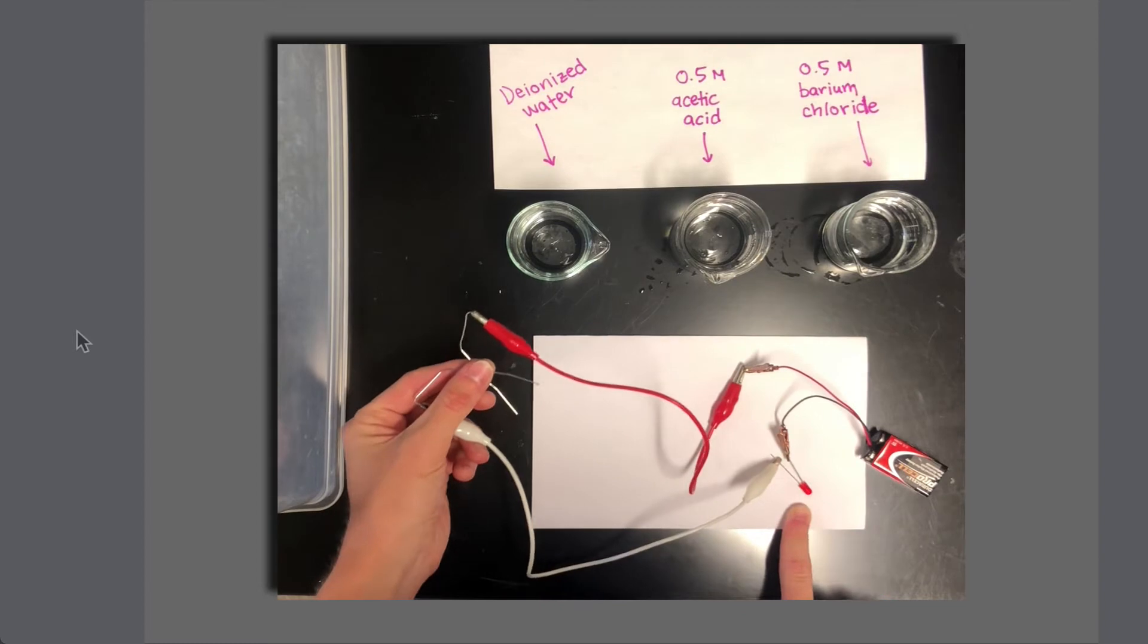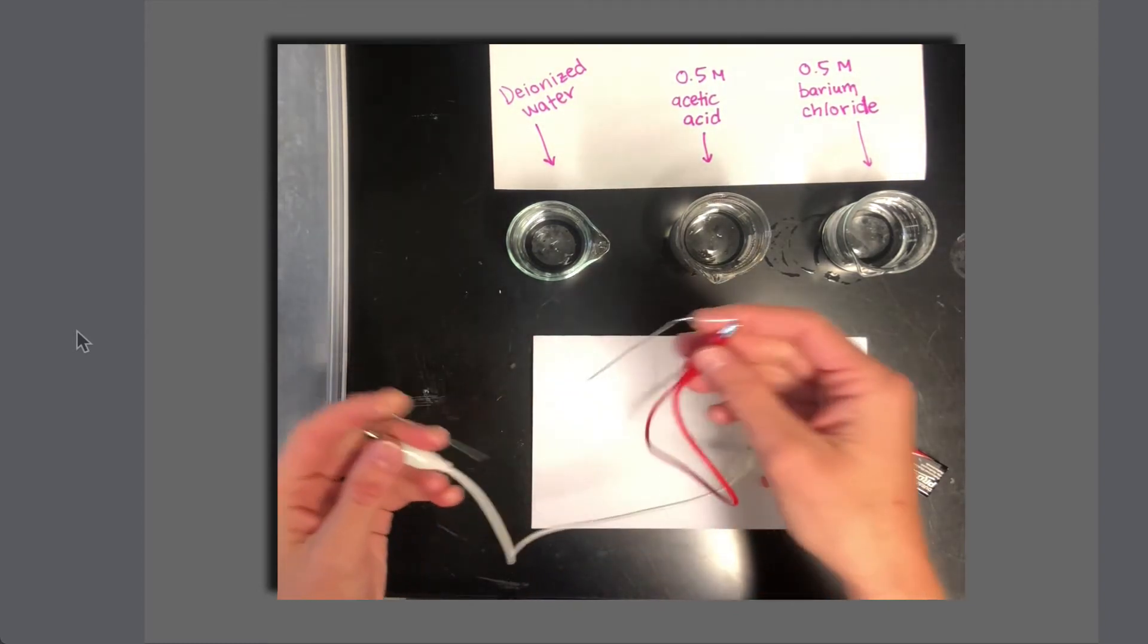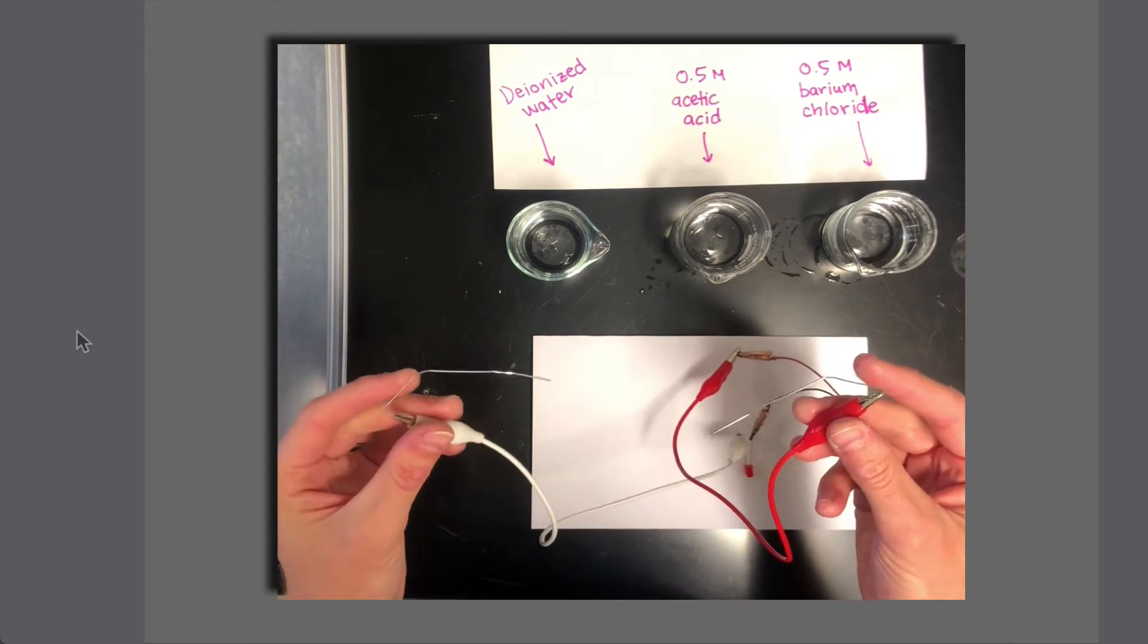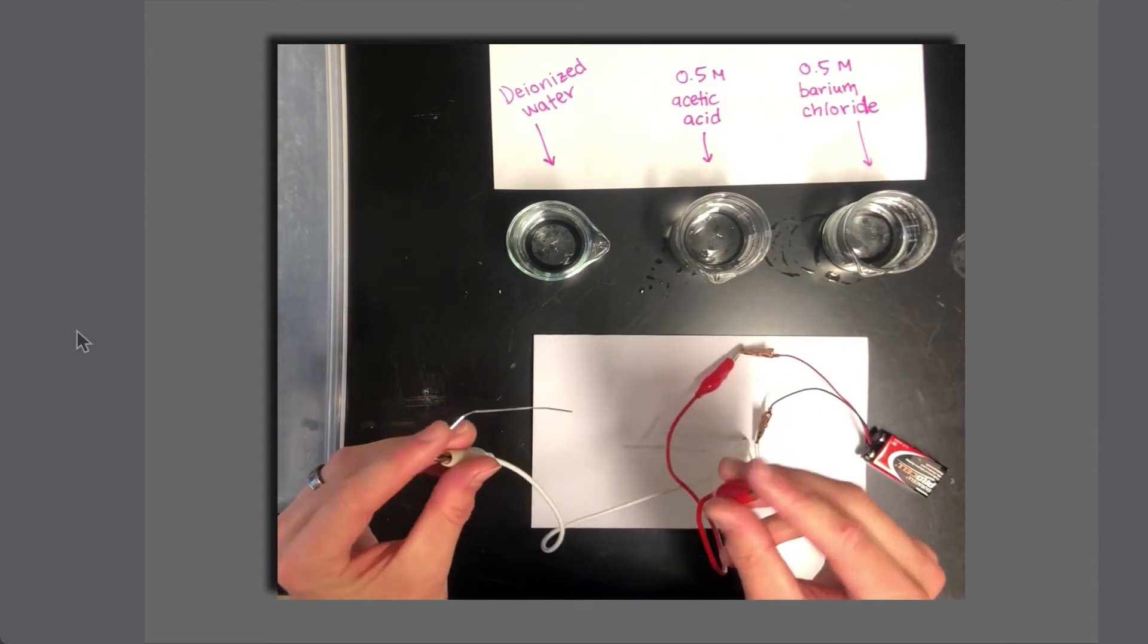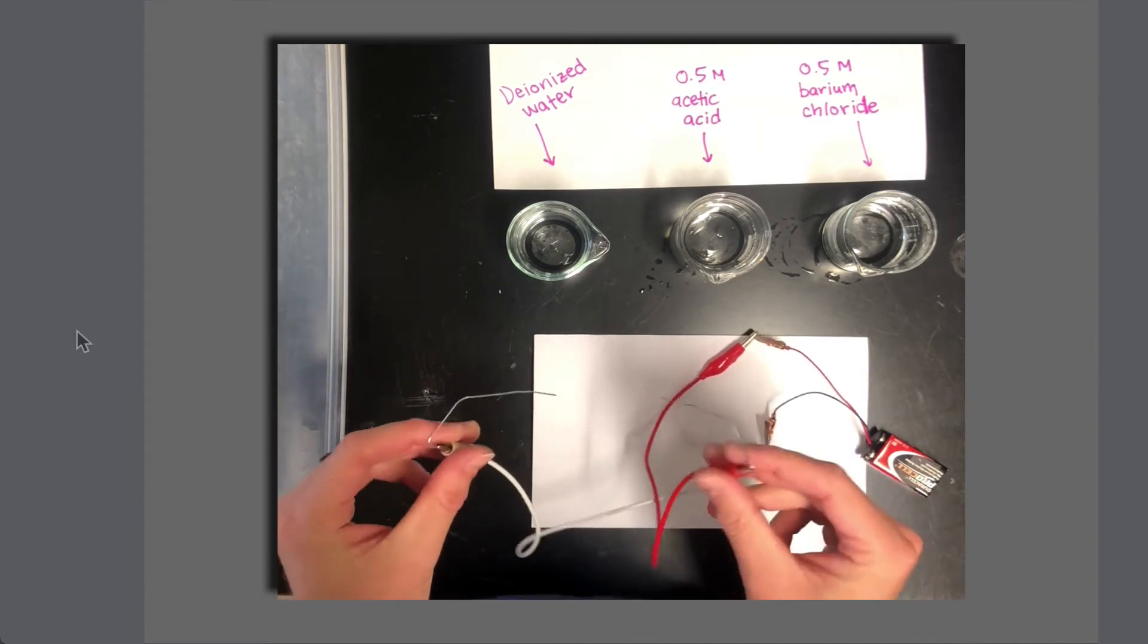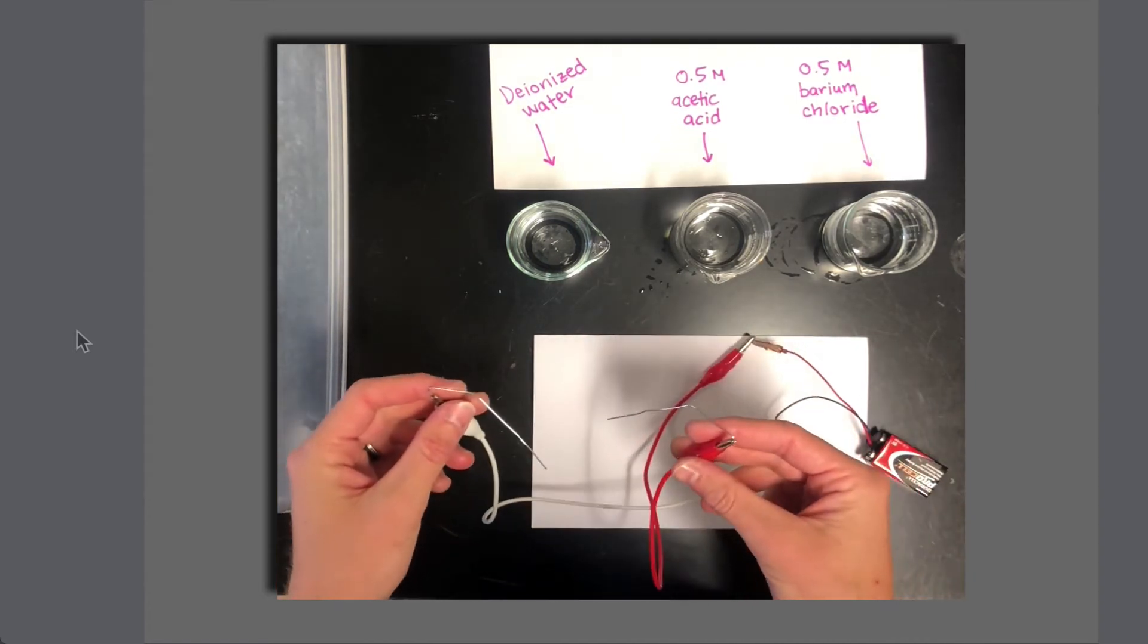So here we have a complete circuit, and essentially what I've done is broken the circuit and placed these two paper clips at that break so that I can insert the paper clips into a solution and see what happens when I try to run current through the solutions or substances.